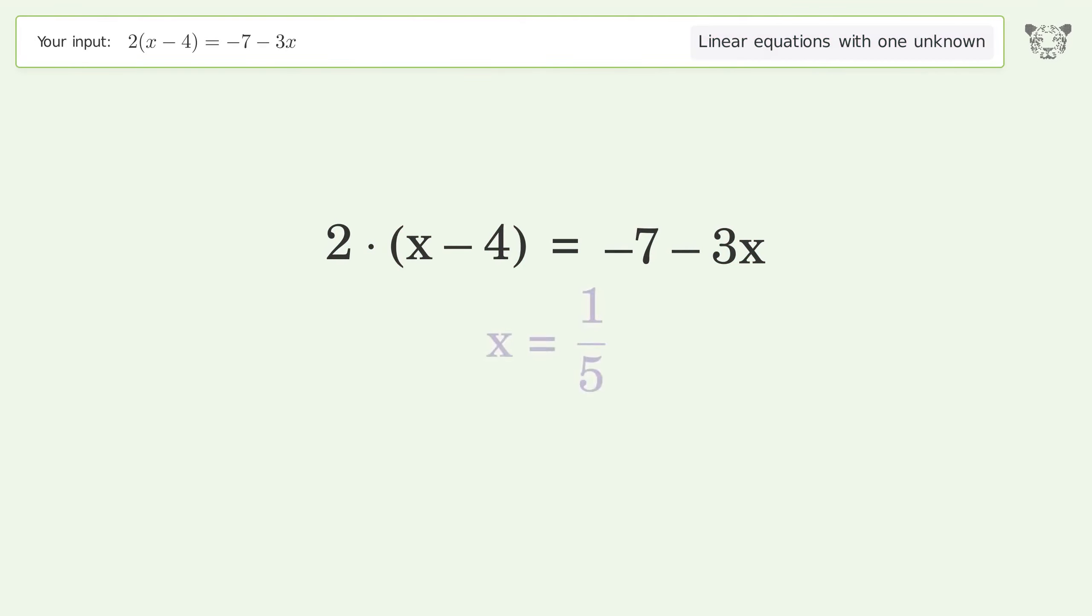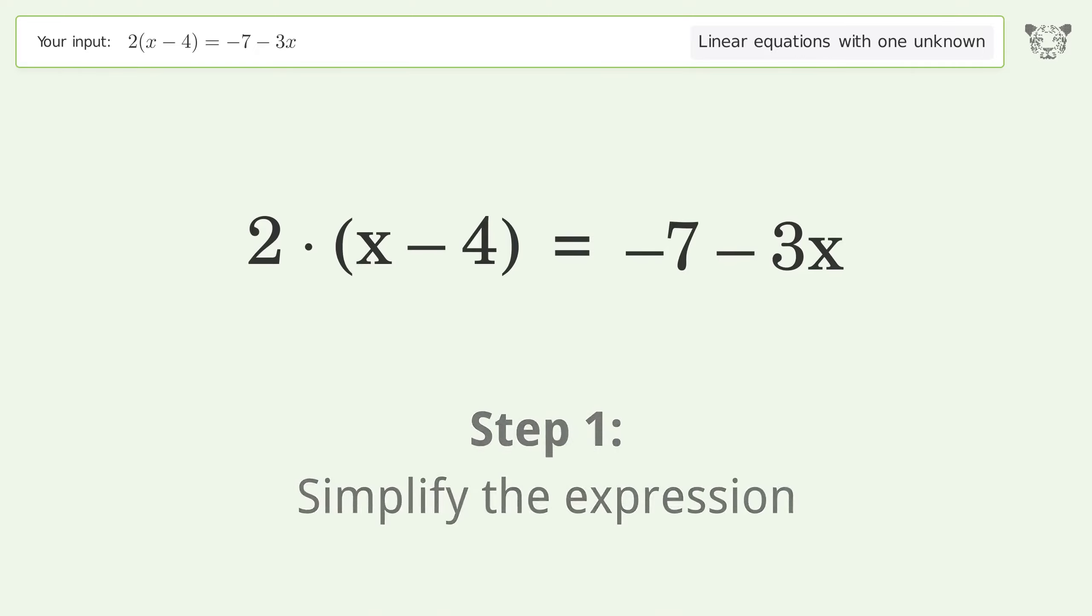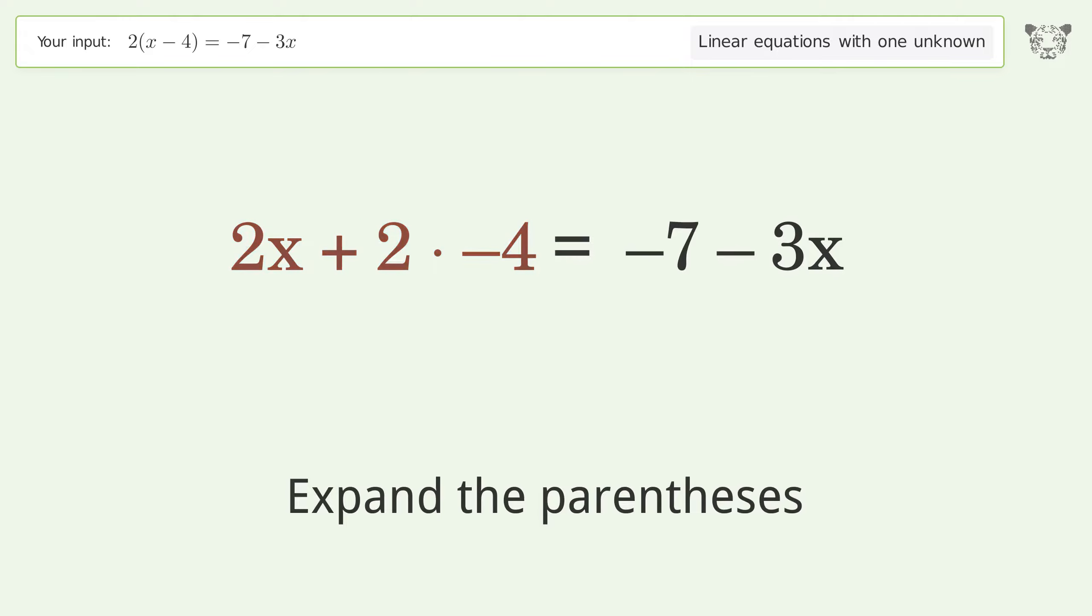You ask Tiger to solve this, which deals with linear equations with one unknown. The final result is x equals 1 over 5. Let's solve it step by step. Simplify the expression. Expand the parentheses.